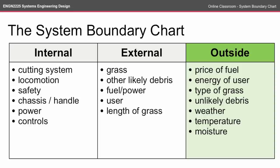Lastly, things considered outside the scope of my system are things that I can't really control — things like the price of the fuel, the energy of the user, maybe the type of grass, unlikely debris (I'm hoping the user might not use the lawn mower to chop down trees), the weather, temperature, and moisture. All these are things I consider outside of my system boundary and outside the scope of my problem.